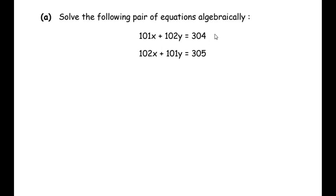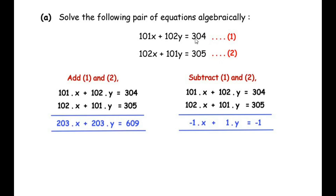If we go for the standard elimination method where we multiply the first equation by the coefficient of x or y, the numbers become really big and you will be losing your time in the exam. You cannot sit multiplying 102 by all these numbers, so let us figure out some other method — that is, addition and subtraction of these two equations.